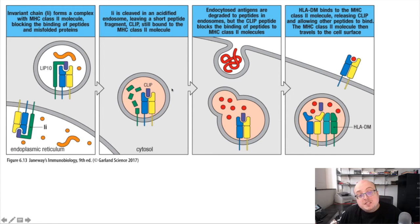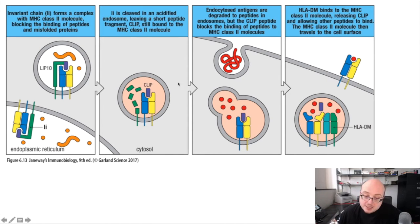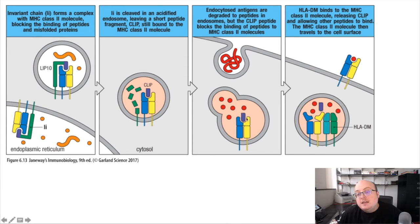This endosome containing MHC class II is going to fuse with other endosomes which have been coming in through endocytosis or phagocytosis, and it's going to meet up with antigenic peptides which have been degraded in those other endosomal compartments. At this point, MHC class II is in contact with its antigens. However, it still can't bind because its peptide binding groove is still blocked by CLIP.